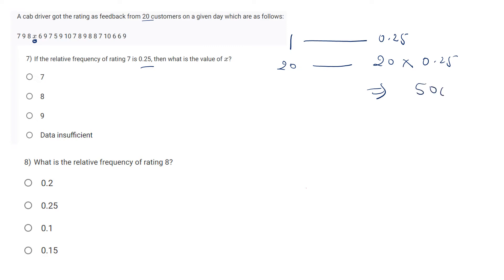20 into 0.25 is equal to 5. Then the total frequency should be 5. Let's see what is the total frequency of 7. It's 1, 2, 3, and 4. One is missing and it should be 5, so x is equal to 7.